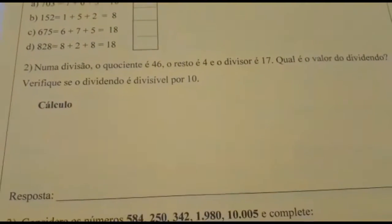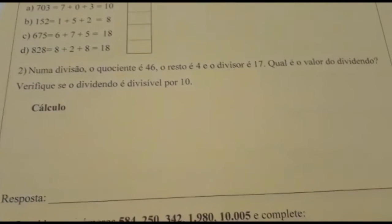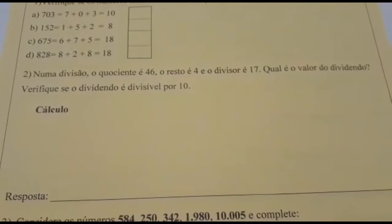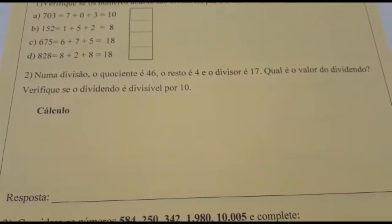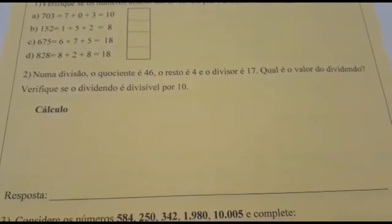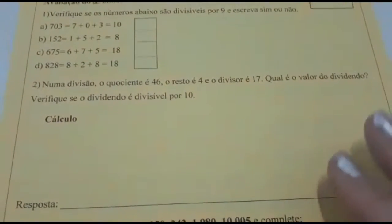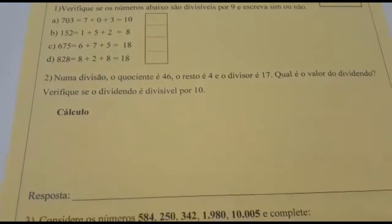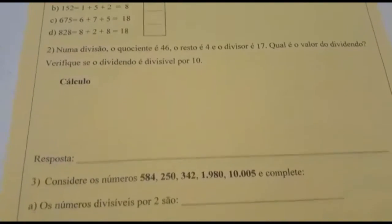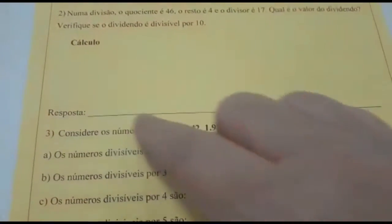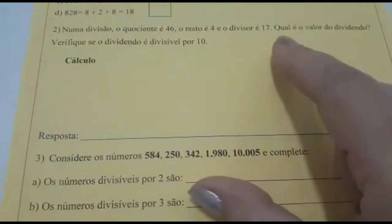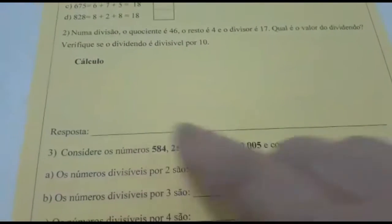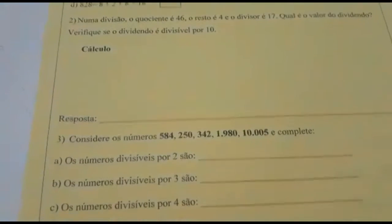Número 2: Numa divisão, o quociente é 46, o resto é 4 e o divisor é 17. Qual é o valor do dividendo? Verifique se o dividendo é divisível por 10. A primeira coisa que vocês vão ter que fazer é armar a continha para saber onde fica cada um, e depois verificar se o dividendo é divisível por 10. Não esqueçam que tem que colocar a resposta: o valor do dividendo é... e colocar.